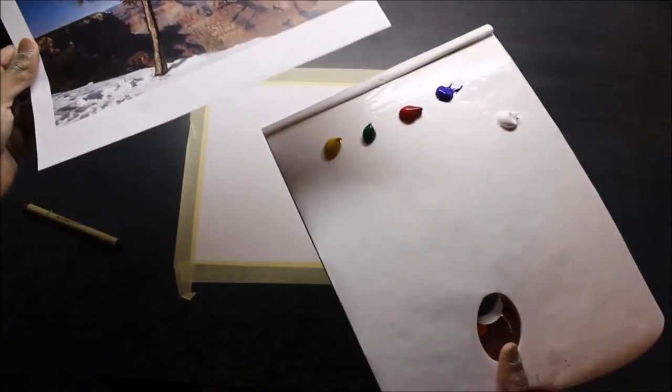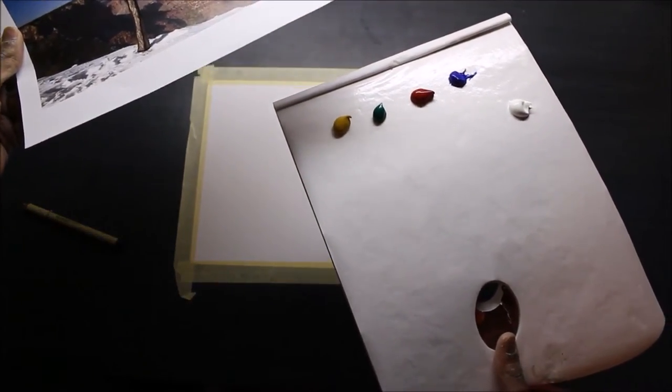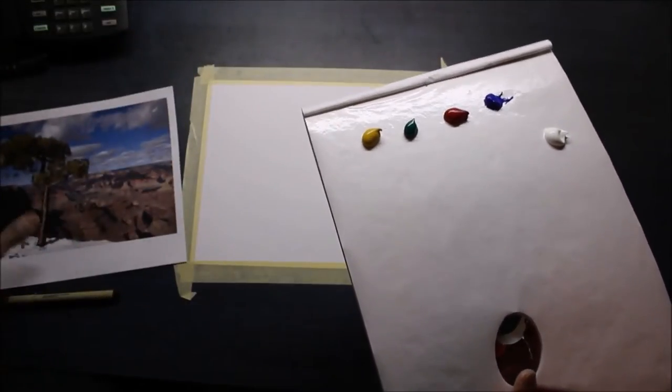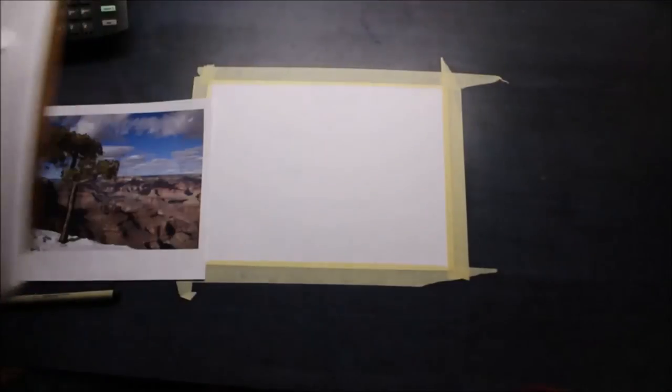So I have the palette right here - we have some yellows, a green, a red, a blue, and a white. I picked these colors because those are the primary colors that I see in this image.